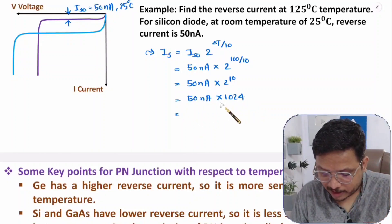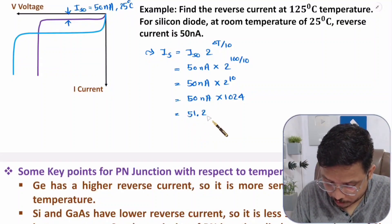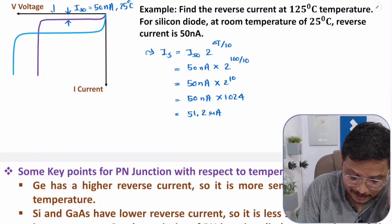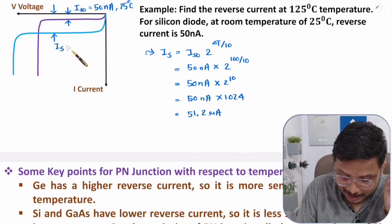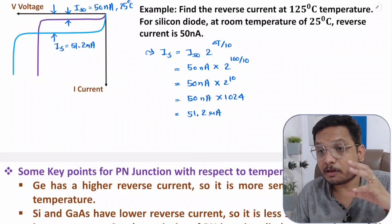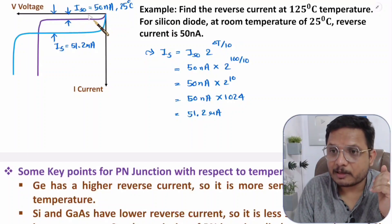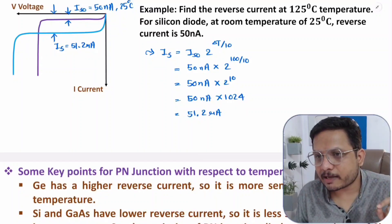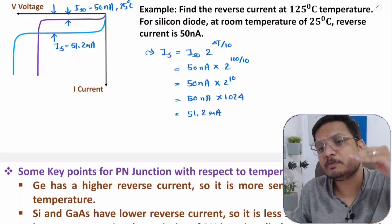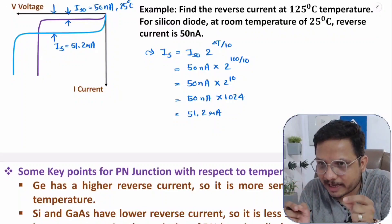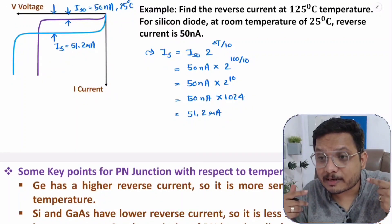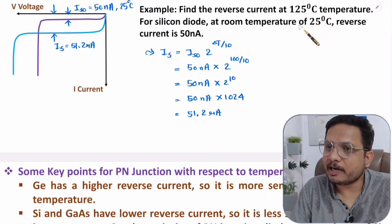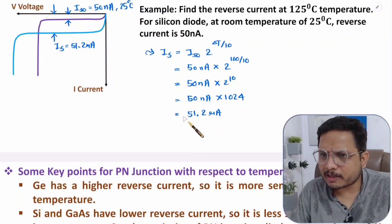2^10 equals 1024, so I_S = 50 nA × 1024 = 51.2 microamperes. The current has gone from nanoamperes to microamperes — that's almost 1000 times greater. As temperature increases, reverse current increases because minority carrier concentration increases with temperature. Increasing temperature by 100°C results in more than 1000 times more reverse current.